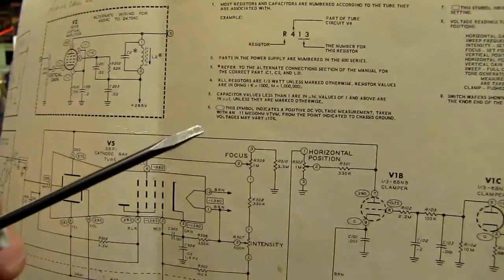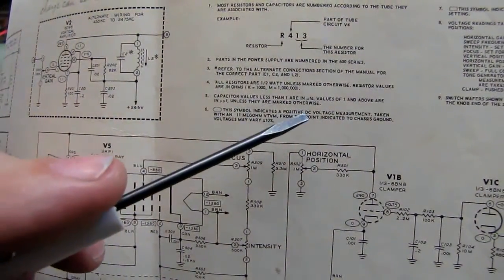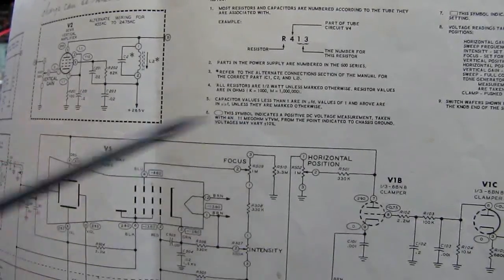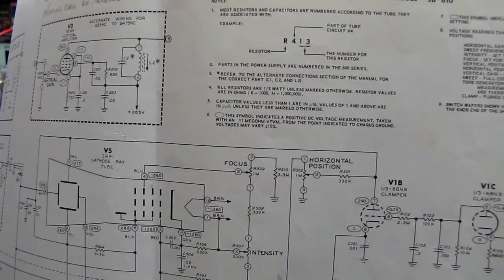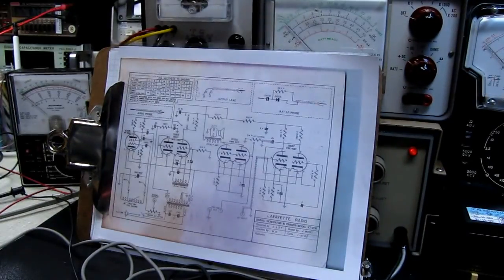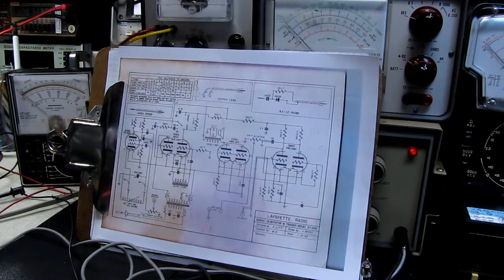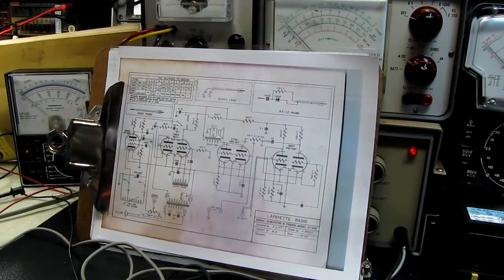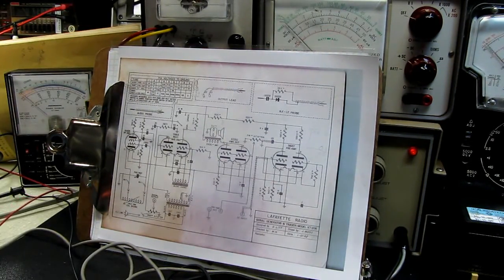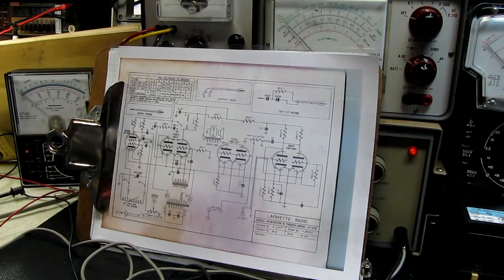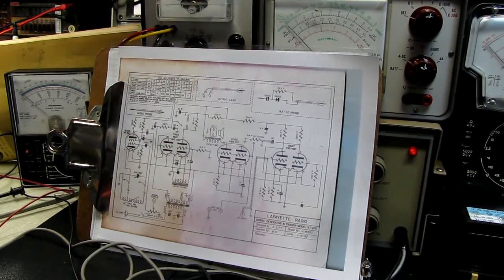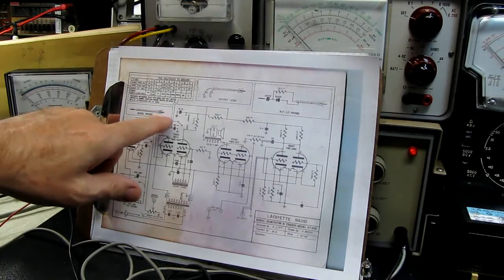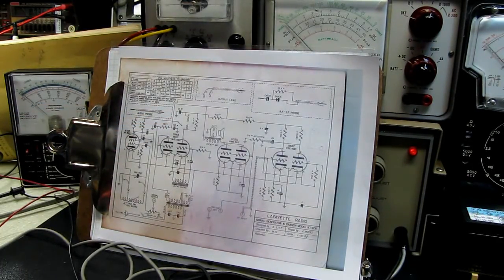You will see on some schematics like this one. This symbol indicates a positive DC voltage measurement taken with an 11 megaohm VTVM. That's an extremely important distinction to make between the two schematics - one spells out a 20,000 ohms per volt meter, the other one specs out an 11 megaohm VTVM.